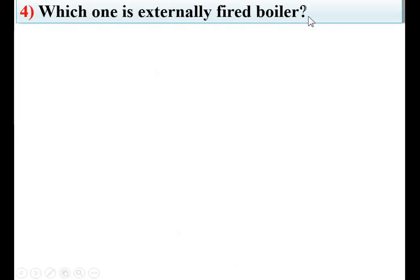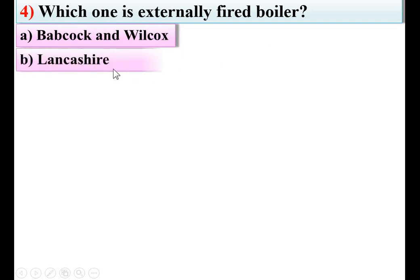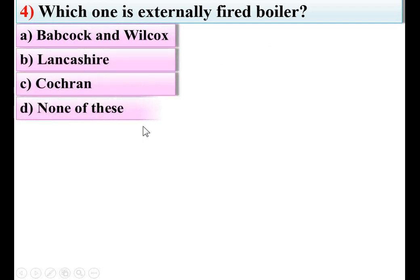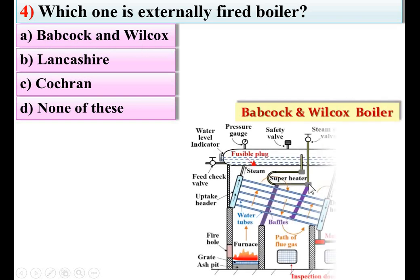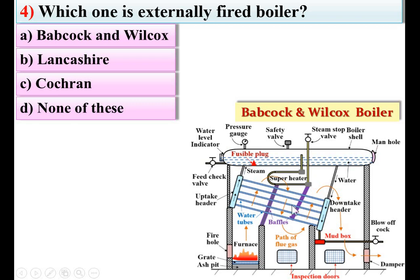Which one is an externally fired boiler? Options: Babcock and Wilcox, Lancashire, Cochran, none of these. The answer is Babcock and Wilcox boiler. Here you can see the furnace is outside of the boiler shell, and that is why it is called an externally fired boiler. So A is the right answer.